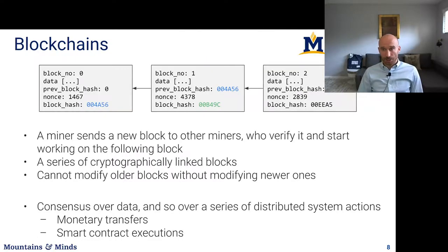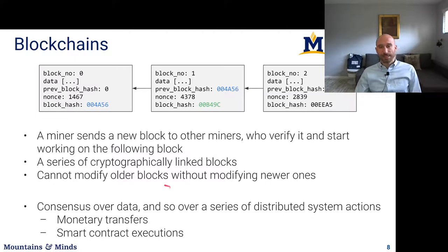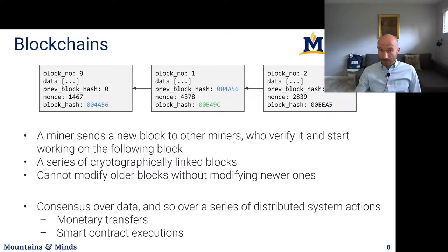The last unstructured peer-to-peer system I want to tell you about is blockchain — and this is a very brief introduction. I talk much more about them in my distributed systems class, and this spring I'll be teaching a graduate course more dedicated to blockchains called Distributed System Implementation. The way blockchains work at a high level: it's a series of blocks or data structures that contain some data. That data could be cryptocurrency transactions, invocations of smart contracts, or just arbitrary data you want to put onto the blockchain.